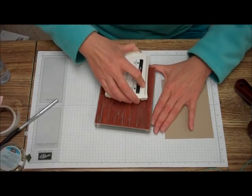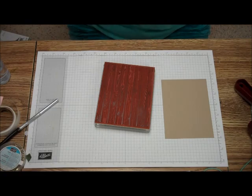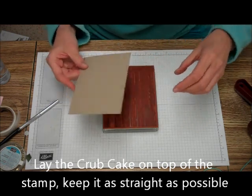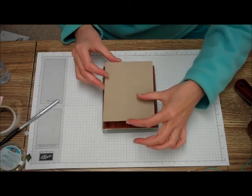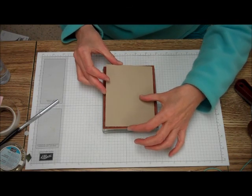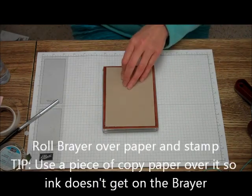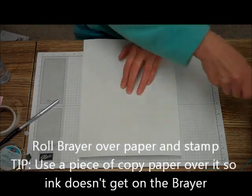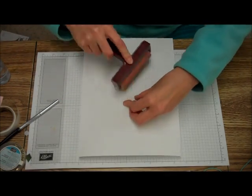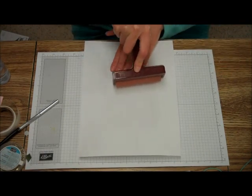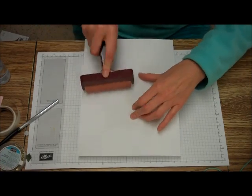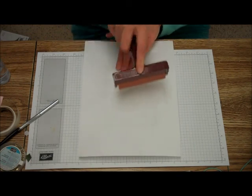Then you're going to lay your crumb cake as straight as possible on top of that stamp. What I usually do is put a piece of copy paper over it so I don't get ink on my brayer, because then it would be all over the back of everything and all over my hands. And I'm just going to brayer that to get it all nice and inked on the cardstock.